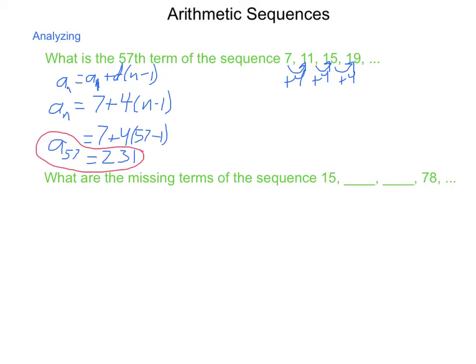Next, what are the missing terms of the sequence 15, two missing terms, and then 78? Well, these two missing terms represent the fact that we are adding the same difference three times. So in order to find d, we're going to take 78 and subtract 15, then divide it by how many changes that took, which is 3. So 78 minus 15 is 63. 63 divided by 3 is 21. So in order to move from one term to the next, we're adding 21.